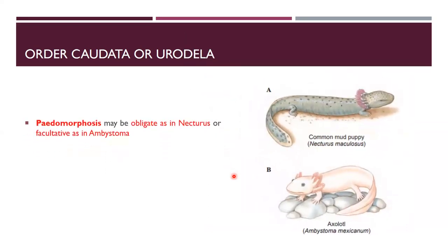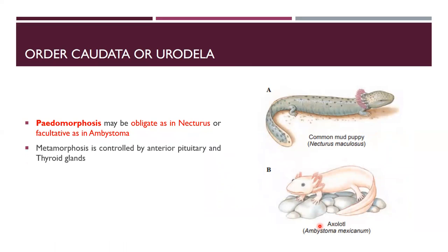Pedomorphosis is incomplete metamorphosis. It may be obligate as in Necturus (common name: mud puppy) or facultative as in Ambystoma (common name: axolotl). Metamorphosis is controlled by the anterior pituitary gland, thyroid glands, and the most important hormone — thyroxine — which plays the most important role in metamorphosis.